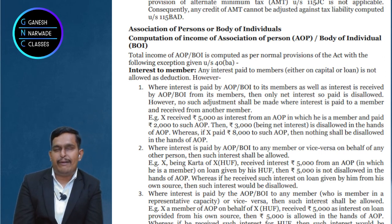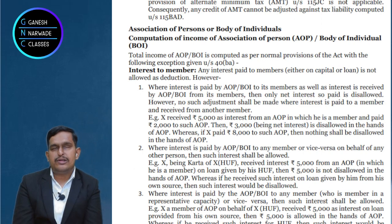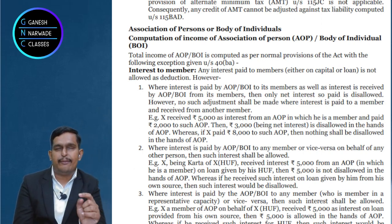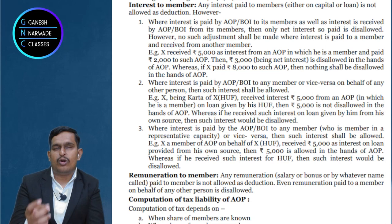In simple language, the excess of debit interest over credit interest will be added back. Debit interest for AOP means expenditure — Vidya Bharati paying to members. Credit interest means interest on drawings, which Vidya Bharati is earning as income. If there is only debit interest and no credit, then the entire interest will be added back. But if there is both debit and credit — compare them. If debit is more, add back. If credit is more, ignore.